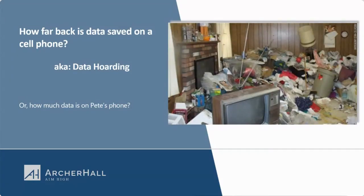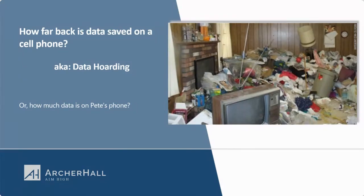We use Cellebrite to pull data off the phone and create an image — an exact copy of the data on the phone. Forensics people refer to this as an image, not a picture. Cellebrite processes and categorizes all the data and presents it so we can analyze what the user was doing. I'm going to use my own phone as an example throughout this presentation because I know what's normal and what's abnormal.